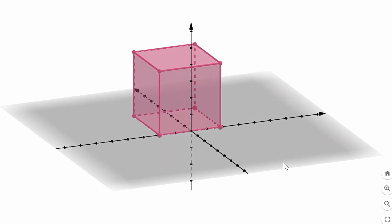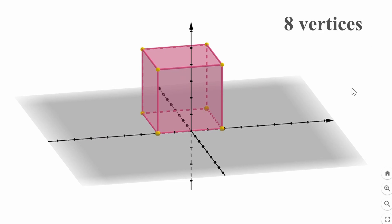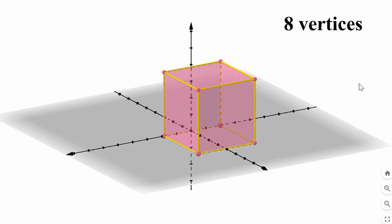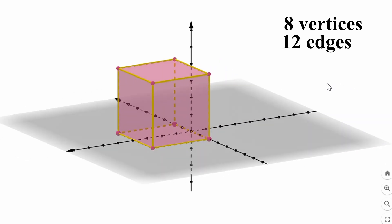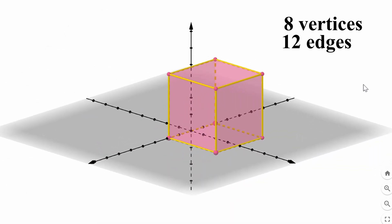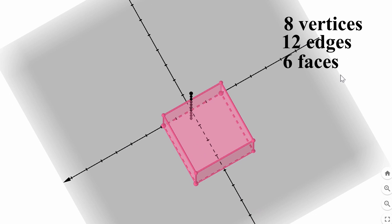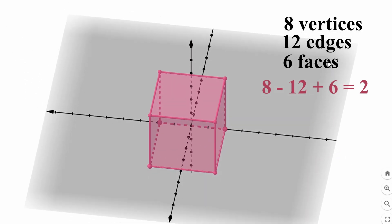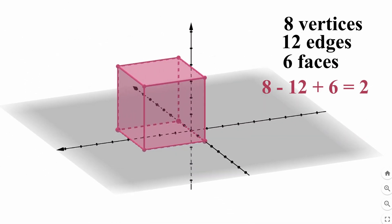The cube has eight vertices, twelve edges, and six faces. And eight minus twelve plus six is also two.